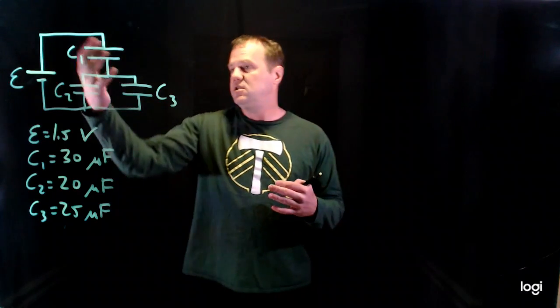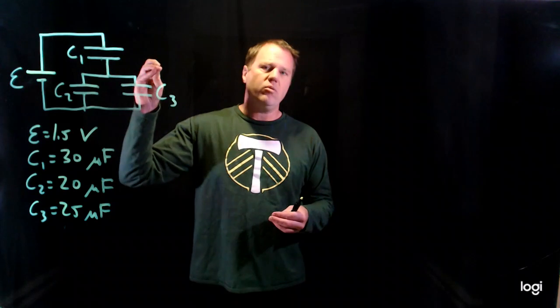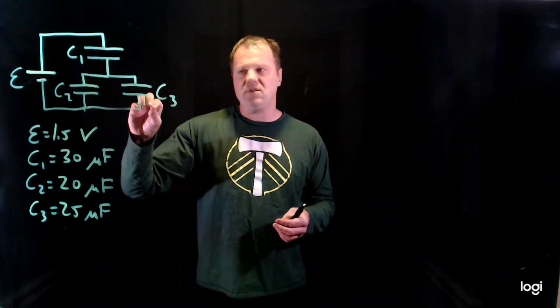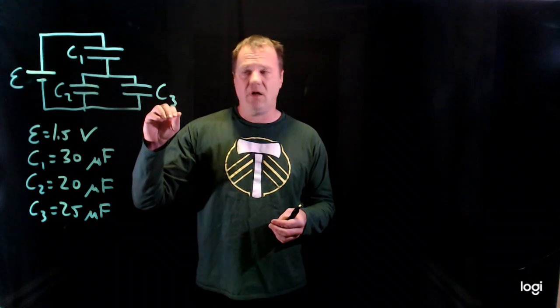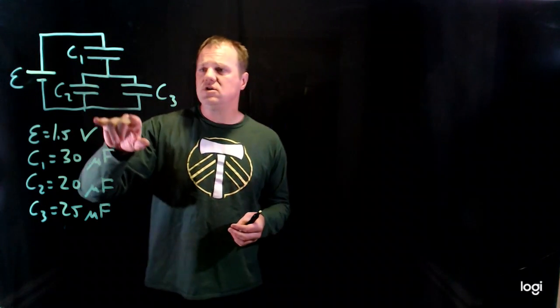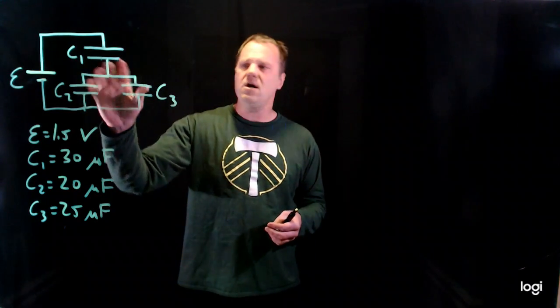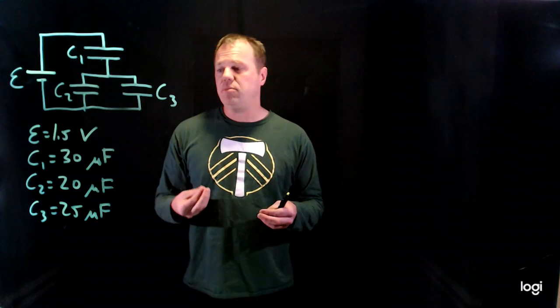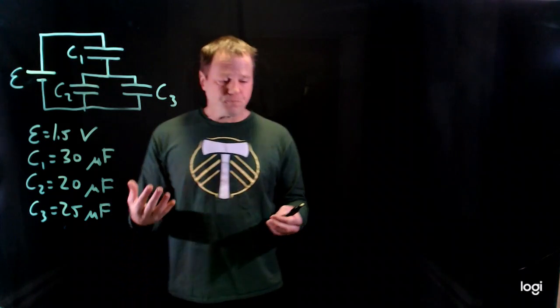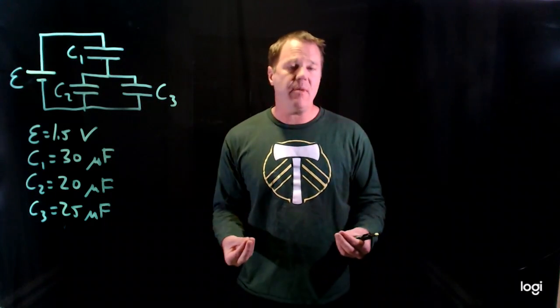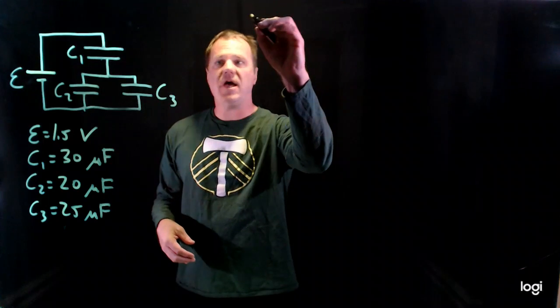So this is hard to solve, complex network of capacitors. So what we do is we simplify this circuit by using the rules for series and parallel for capacitors. So looking at this circuit, capacitor two and capacitor three are in parallel. So we can simply add the capacitances in order to determine their collective behavior, an equivalent capacitance. So let's just go ahead and do that.